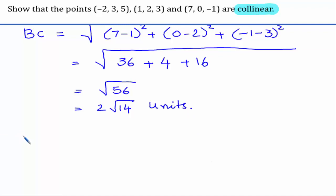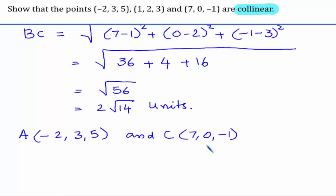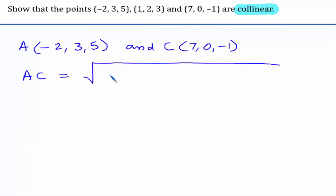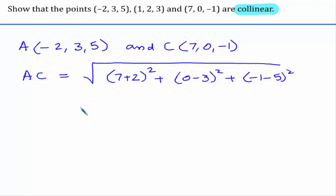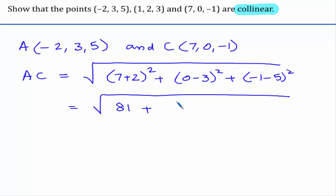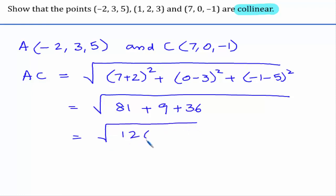Similarly, we consider A as (-2, 3, 5) and C as (7, 0, -1), and find the distance AC. We get: (7 plus 2) whole square plus (0 minus 3) whole square plus (minus 1 minus 5) whole square. Simplifying: 9 squared is 81; minus 3 whole square is 9; minus 6 whole square is 36. This gives 126, and on simplification we get 3 root 14 units.